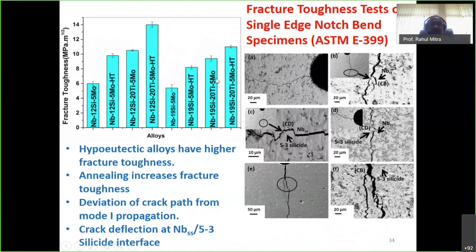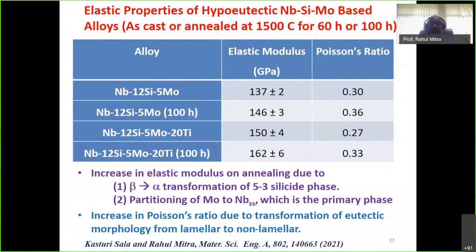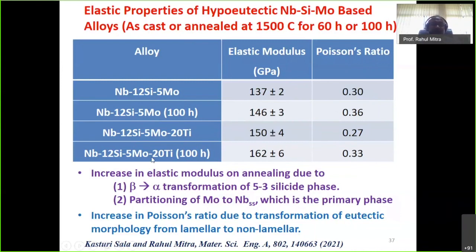The quaternary alloys show higher fracture toughness than ternary alloys, confirming the benefit of titanium addition. Elastic modulus was measured by ultrasound phase spectroscopy, involving measurement of phase shift at different frequencies and velocities of longitudinal and shear waves to calculate elastic modulus and Poisson's ratio. On annealing, in both ternary and quaternary alloys the elastic modulus increased and Poisson's ratio became more metal-like: ceramics have a Poisson's ratio of ~0.2, metals ~0.33, and a perfectly plastic material ~0.5. Titanium addition causes an increase in elastic modulus.